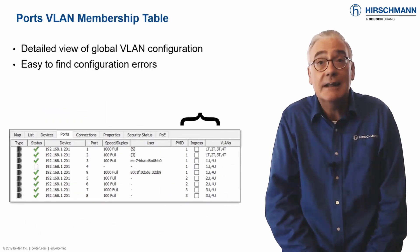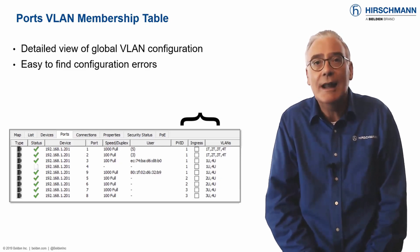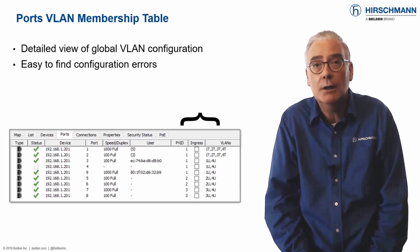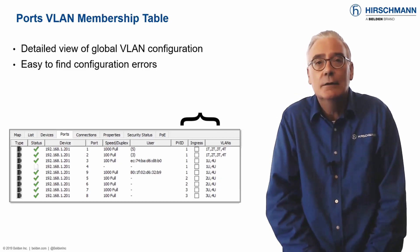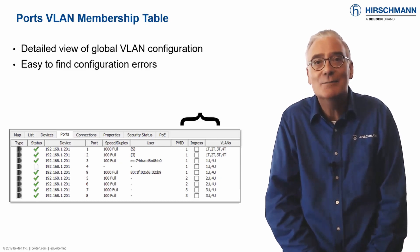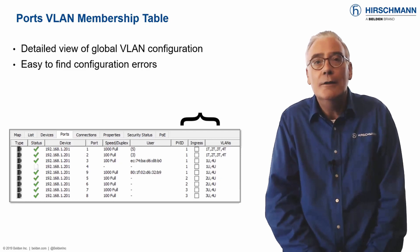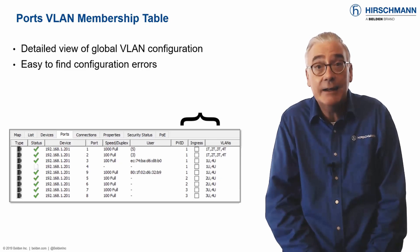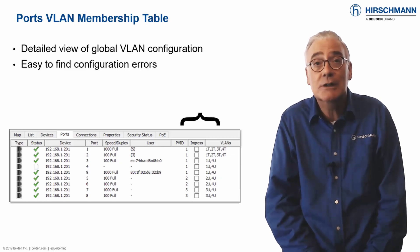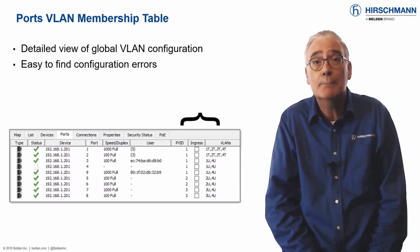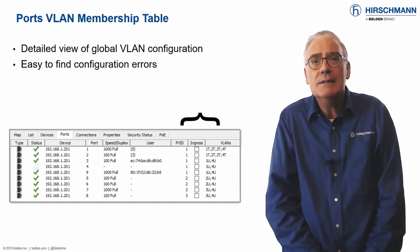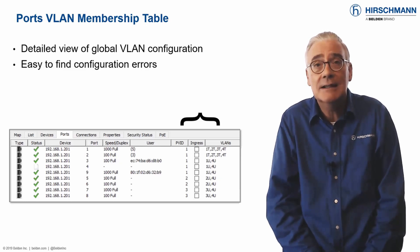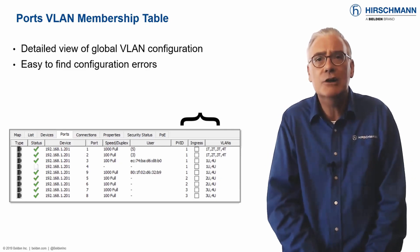The VLAN viewer in Industrial HiVision is a great tool which allows you to view a VLAN topology as if it were a physical network. It's easy to spot mistakes. Fixing the mistakes often requires more detailed information. The VLAN membership table provides granular information about VLAN ingress rules and VLAN egress rules across all devices which support public VLAN information. This provides comprehensive network-wide information about configured VLANs, essential for finding configuration errors.